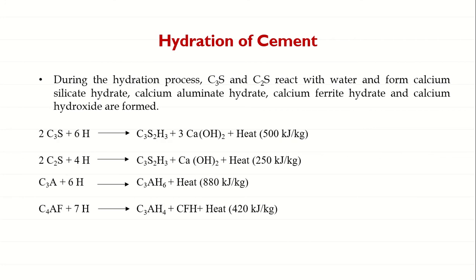From the balanced chemical reactions, we can observe that C3S and C2S reacting with water produce C3S2H3, which is essentially CSH gel. C3S and C2S are responsible for strength contribution, so when they react with water we get CSH gel formation, which contributes strength to the concrete along with calcium hydroxide and heat. C3A reacting with water gives CAH — calcium aluminate hydrate — which binds all the ingredients of concrete together. C4AF reacts with water to give CFH — calcium ferrite hydrate — responsible for the dark gray color and sulfate resistance.